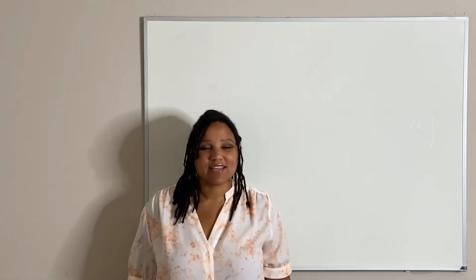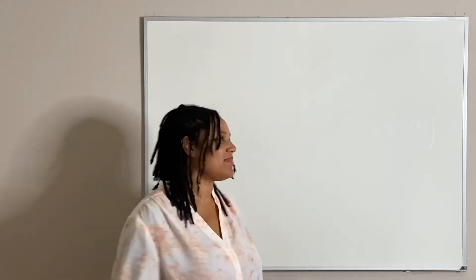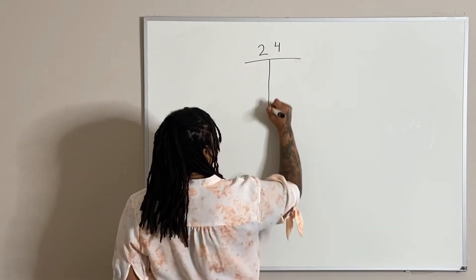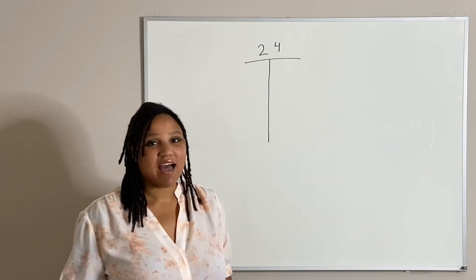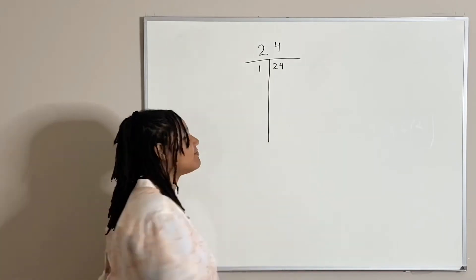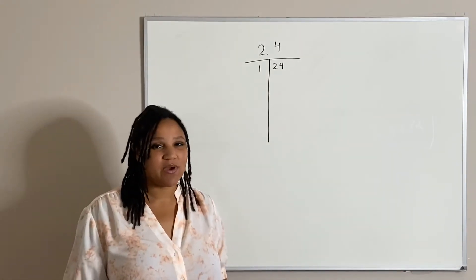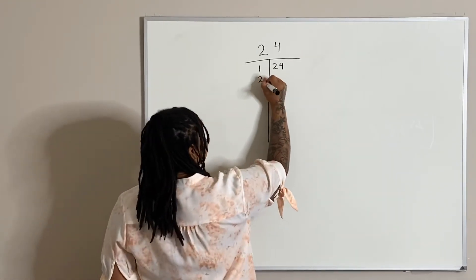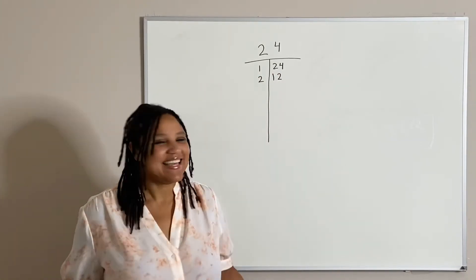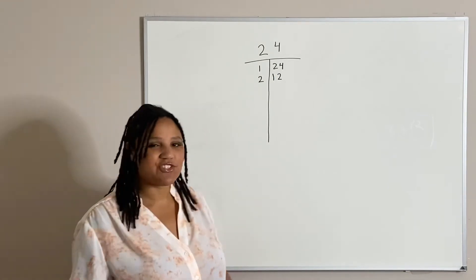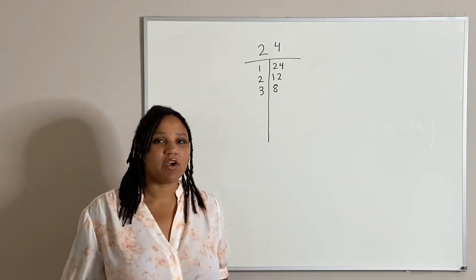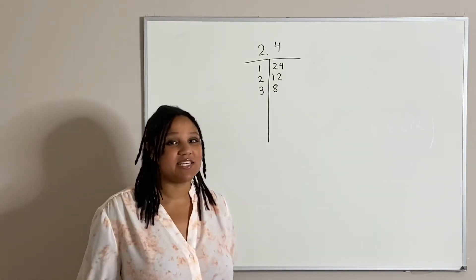How about the number 24? Let's do it the fast way this time. Obviously, one and 24 works. The number two and the number 12 works. How about the number three? Yes, three times eight is 24. What about the number four? Yes, four times six is 24.